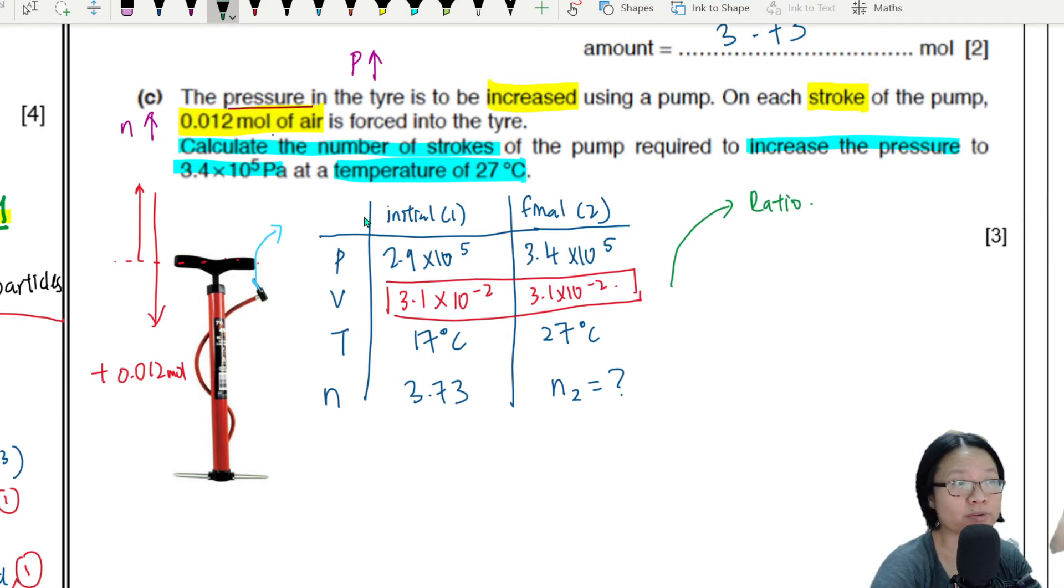Okay, or someone's gonna label this one as method 1. Or you could look at method 2 where you use the ideal gas equation. Which one to use? I show you both. Okay, I do method 1 first.